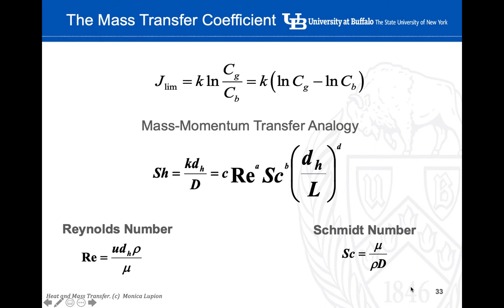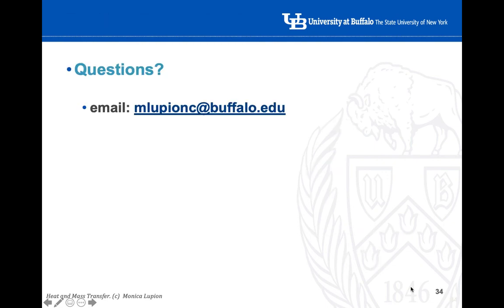If we can calculate the Sherwood number, since we know the diameter and the diffusivity, we can calculate the value of k. There are different empirical equations to calculate the Sherwood number and therefore the mass transfer coefficient. The empirical equations covered in previous lectures can be used — to refresh your memory, these are always a function of the Reynolds number and the Schmidt number for turbulent flow, or a function of the Graetz number and the Schmidt number for laminar flow. That's it — if you have any questions, let me know.